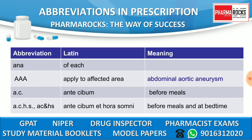AAA also stands for abdominal aortic aneurysm. The third abbreviation is AC, which means 'ante cibum' — before meals. ACHS means 'ante cibum hora somni,' which means before meals and at bedtime.